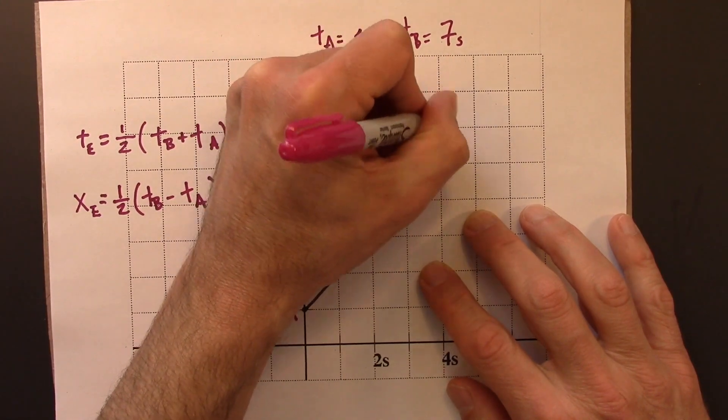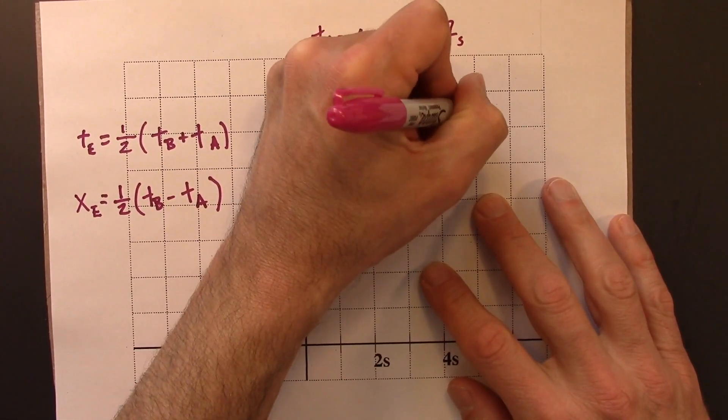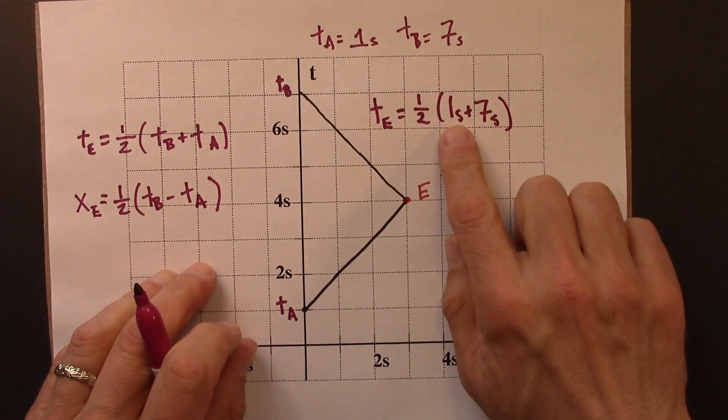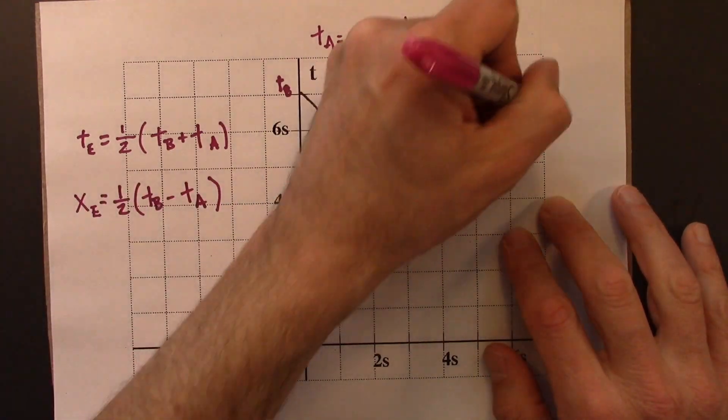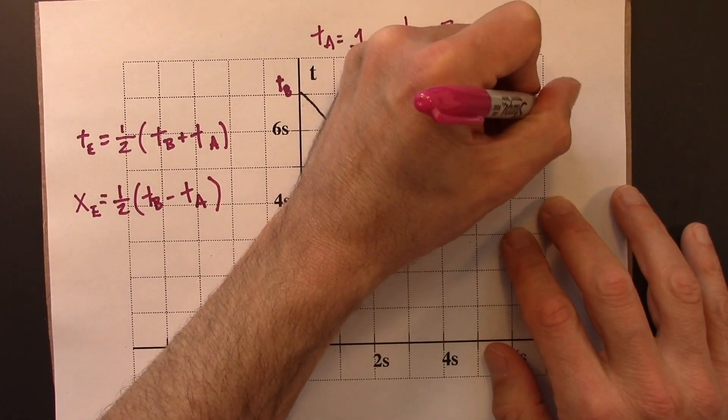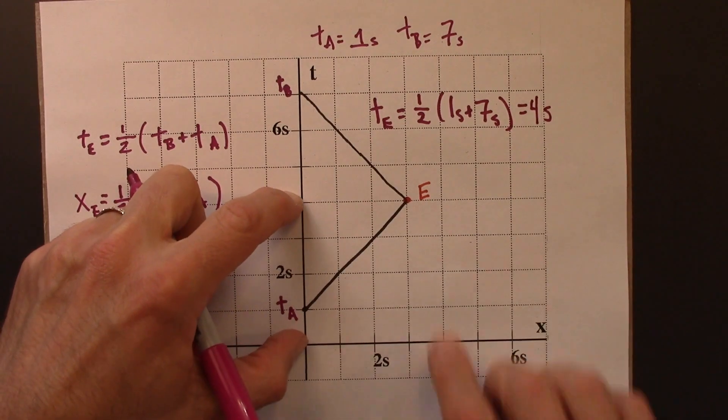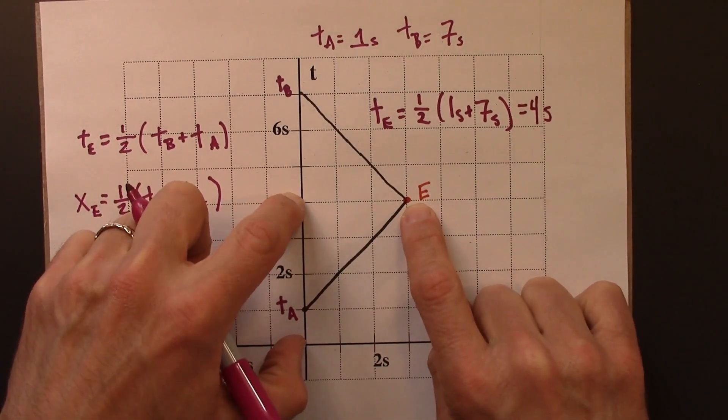TE is a half of one second plus seven seconds. One plus seven is eight. A half of eight is four seconds. And look, that is indeed the time coordinate for event E.